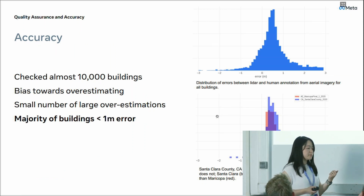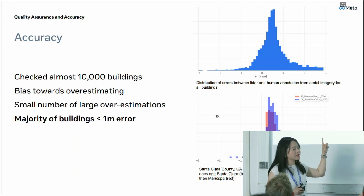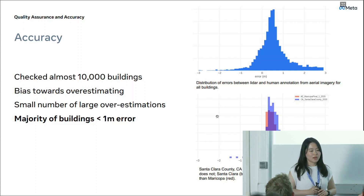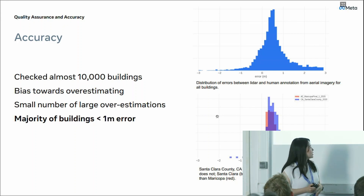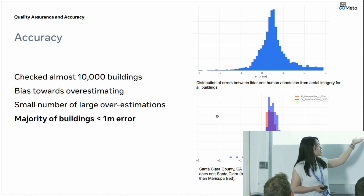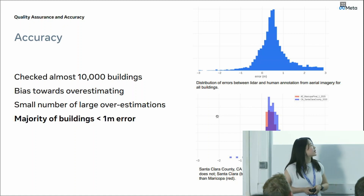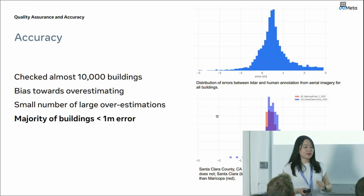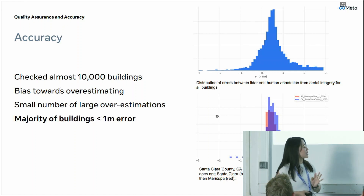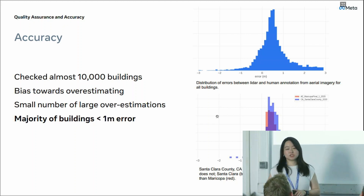Overall, we checked almost 10,000 buildings so far. The figure up there shows the distribution of error between the LiDAR estimation and the human annotations — the majority have less than one meter error. But we do have certain overestimations. The graph here shows the differences when we have point classification versus when we don't. Santa Clara County in blue has point classification and tends to have fewer overestimates. Maricopa County is the word unit without point classification, so it tends to have more overestimates in the presence of trees and other objects.